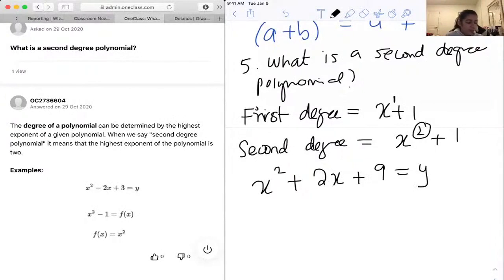Another example could be, I don't know, f of x equals 5x squared plus 9. Or as simple as f of x equals x squared.